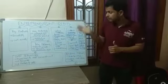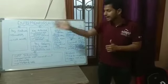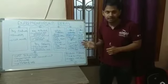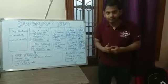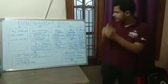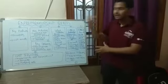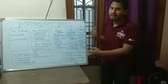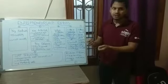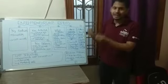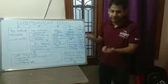This business canvas model has 9 important parameters. Let me explain one by one. I have taken one random numbering, so you can explain it in any way.